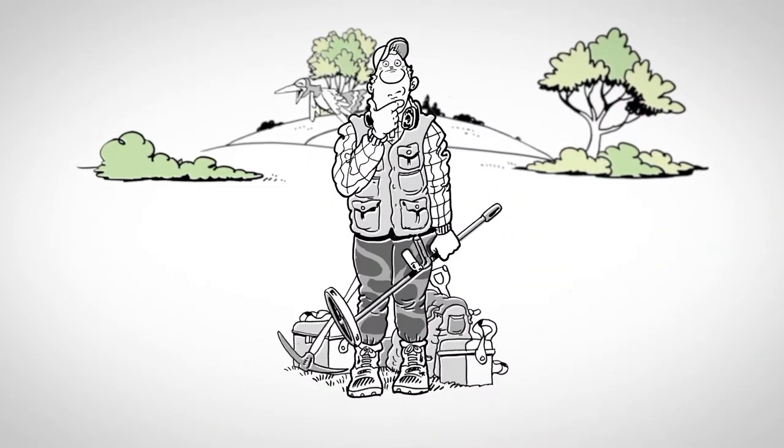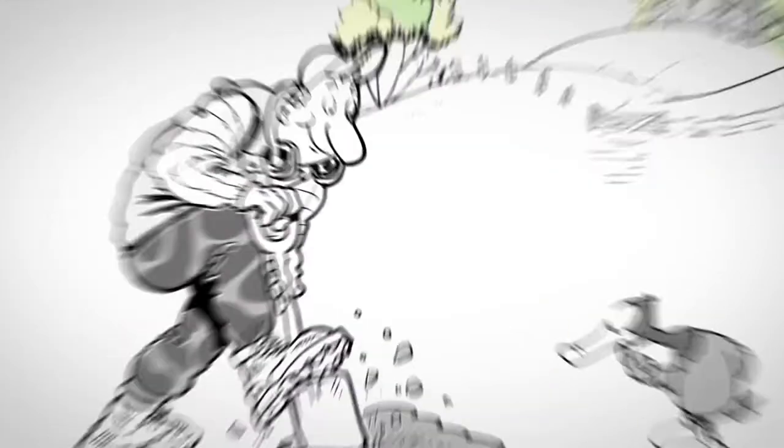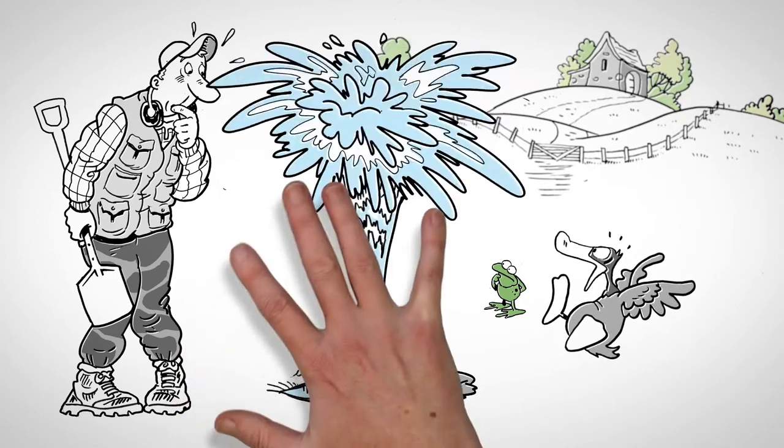Before he starts metal detecting, Robby needs public liability insurance to shield against accidental damage. If he's an NCMD member, this cover is included.